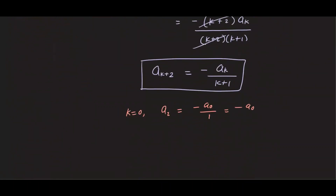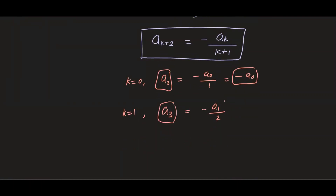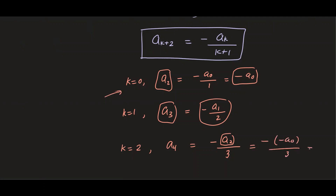Now let's use the recurrence to find a few coefficients. Setting k equals zero: a₂ equals negative a₀. Setting k equals one: a₃ equals negative a₁ over two. Setting k equals two: a₄ equals negative a₂ over three. Substituting a₂ equals negative a₀, we get a₄ equals a₀ over three.